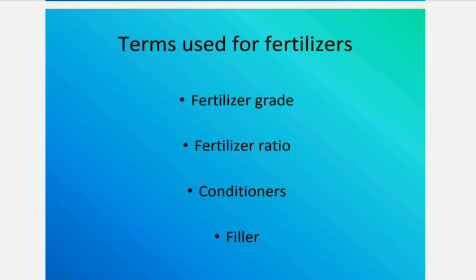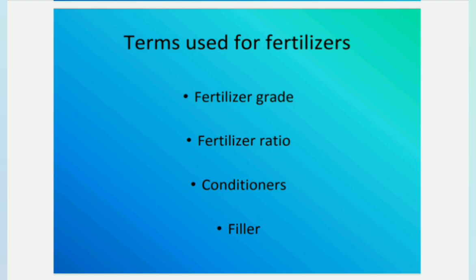Terms used for fertilizers: Fertilizer grade, also called NPK ratings, consists of three numbers, for example 12-6-6. Fertilizer ratio is the percentage of nitrogen, phosphorus, and potassium in the fertilizer mixture. For example, a fertilizer grade of 12-6-6 has a fertilizer ratio of 2:1:1. Conditioners are materials added to the fertilizer mixture during preparation for reducing hygroscopicity and improving physical condition.